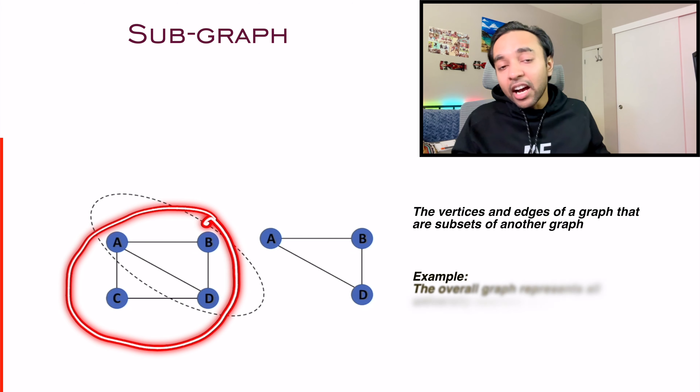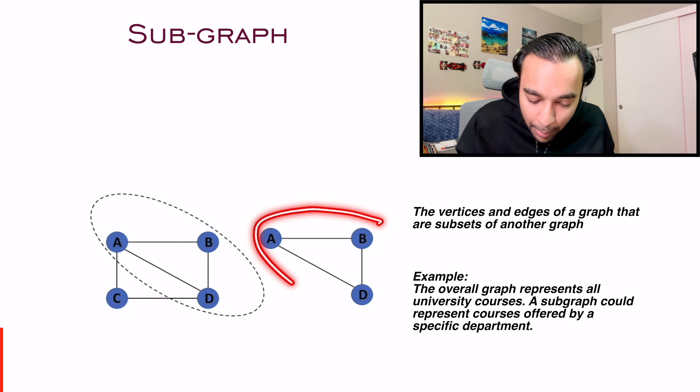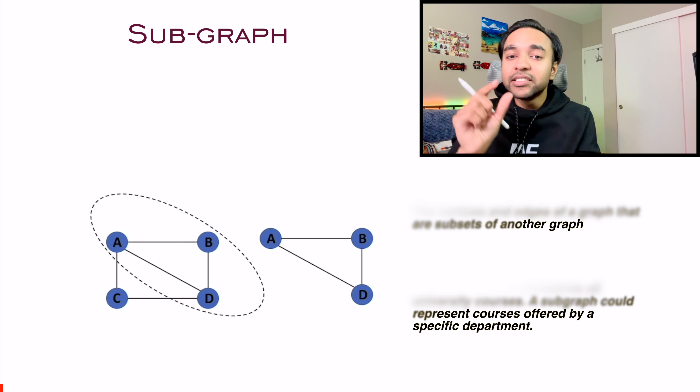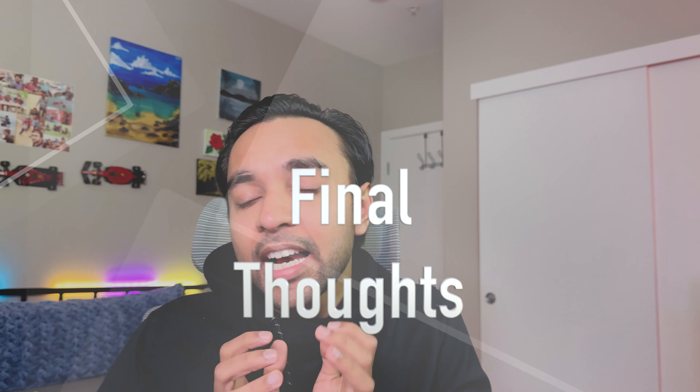The last type of graph is called a subgraph. If you have a complete graph and you just want to analyze a certain portion of it, you snip it out and the resulting graph is known as a subgraph. All of these different types of graphs have different applications, and it is essential to understand them so that when you are reading problems you can identify which type of graph to apply. Always try to relate it to a real world scenario — that will always be helpful.